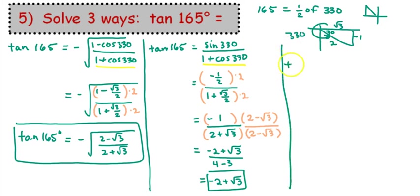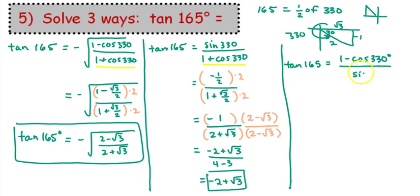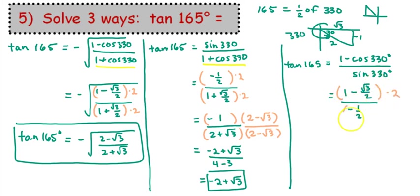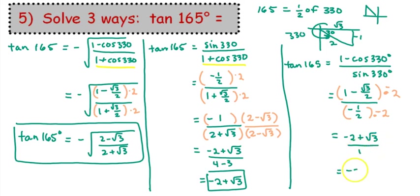Let's use the third version. Tangent 165 is 1 minus cosine 330 over sine 330. That means we have 1 minus square root 3 over 2, all over negative one half. This one is a little bit easier to simplify since we don't have a radical expression on the bottom, so I would definitely go with this one whenever I could. Multiplying by negative 2 on top and negative 2 on bottom, we distribute the negative 2 on the top and get negative 2 plus square root 3. And negative one half times negative 2 is positive 1. That answer looks exactly like the previous answer.